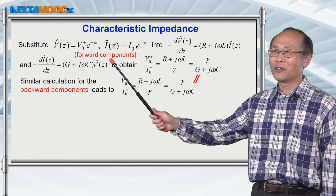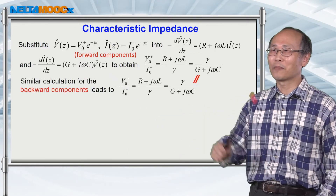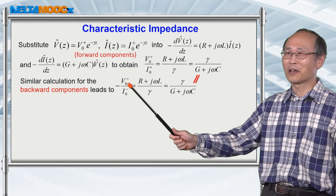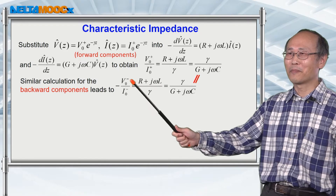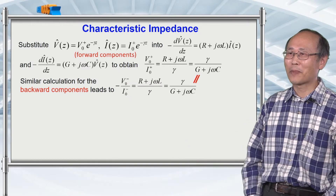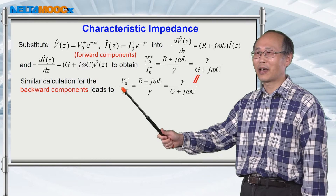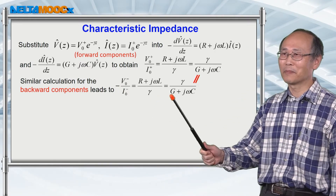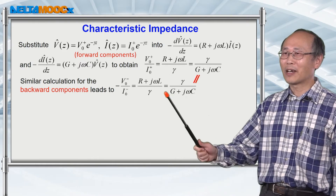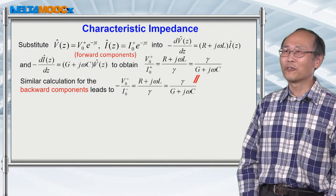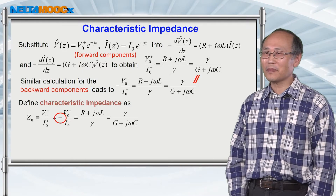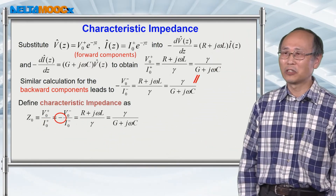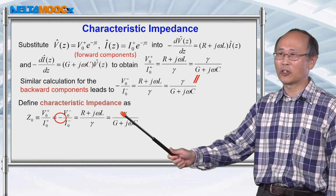You can also do the same thing for the backward voltage and backward current, and with some algebra you can find that the backward voltage over backward current with a minus sign in front of it gives you the same expression. So this is the characteristic value for a transmission line, and we define this ratio to be Z0, the characteristic impedance of the transmission line.